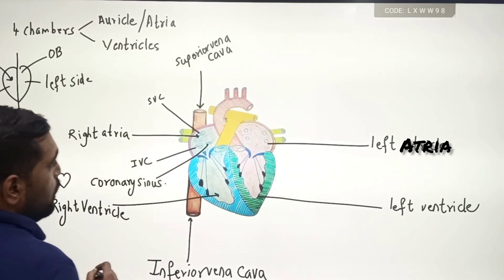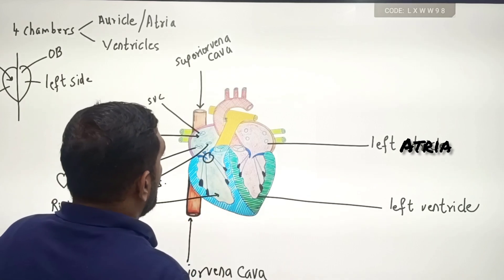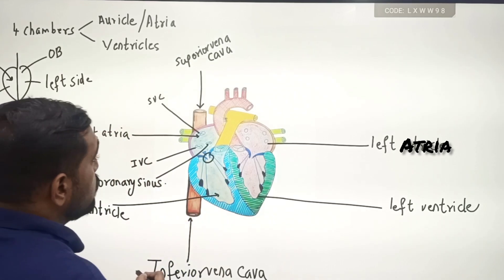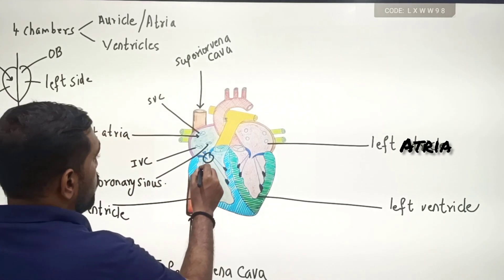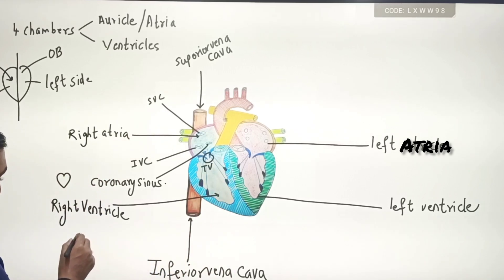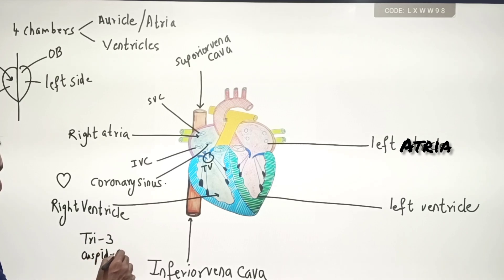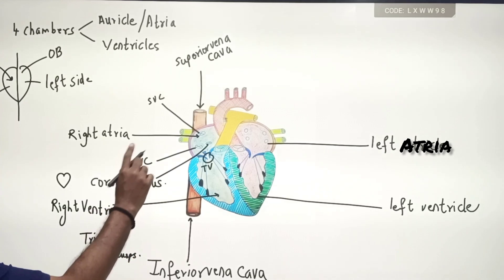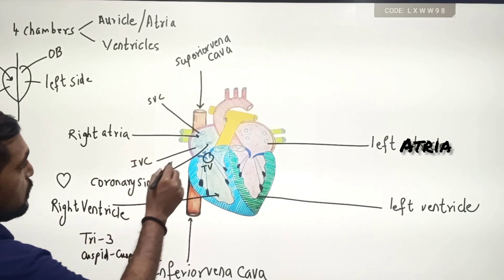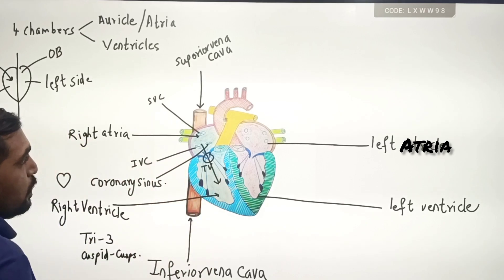On the right side of the heart, you can see a valve here. This most important valve is called the tricuspid valve — TV. Why is it called tricuspid? Tri means three, cuspid means cusp. So there are three cusps responsible for passing the deoxygenated blood from the right atria into the right ventricle.